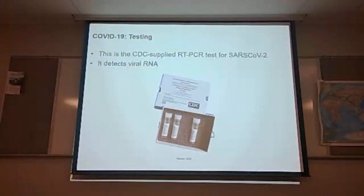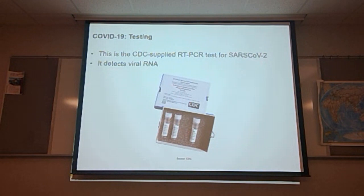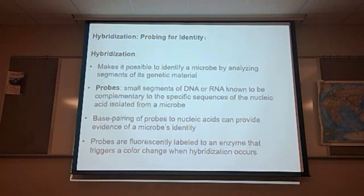COVID-19 testing: this is the type of test given by the CDC to test for SARS-CoV-2, commonly referred to as COVID-19. It detects viral RNA. The test kit contains three vials, each containing a different part of the test.